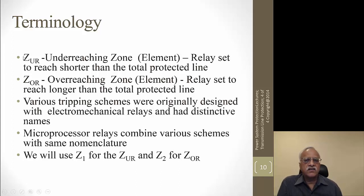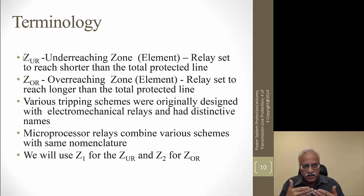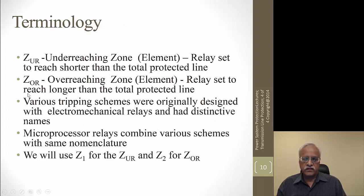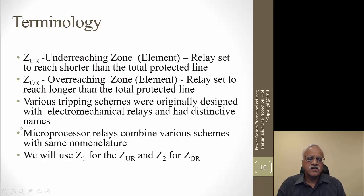Before describing the schemes, let me introduce the concept of underreaching and overreaching relays. An underreaching relay is one not set to 100% of the line section — only to about 85%. That is called underreaching, and in our case, it is zone 1. An overreaching element is set greater than the line impedance and can detect faults beyond the line section — in our case, zone 2. Microprocessor relays use the same nomenclature. There are different schemes based on electromechanical relays that have now been adopted by microprocessor-based relays, and you can combine any combination of scheme types.